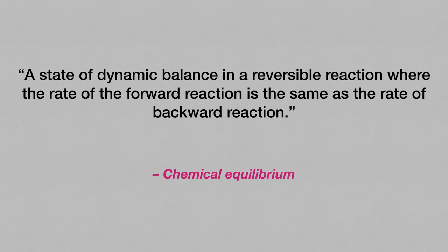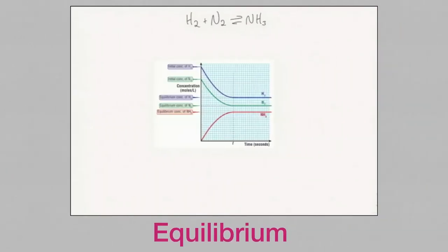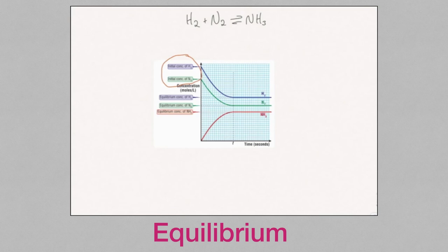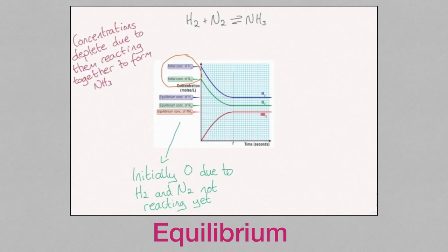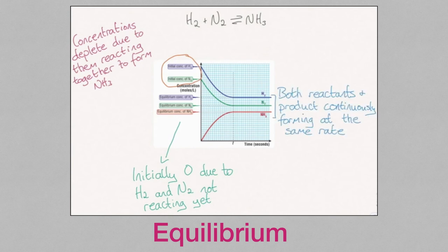Chemical equilibrium is a state of dynamic balance in a reversible reaction where the rate of the forward reaction is the same as the rate of the backward reaction. This graph describes what is happening to the hydrogen and nitrogen reactant concentrations and also the ammonia product concentration. Initially, the hydrogen and nitrogen concentrations are very high because neither have reacted yet. The concentration of ammonia is at zero because no product has formed yet. Once the reactants are allowed to react, the concentrations start to decline and the concentration of ammonia starts to increase. There comes a point where both the reactants and the product are forming continuously at the same rate — this is what we mean by chemical equilibrium.